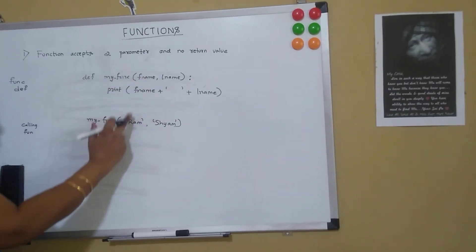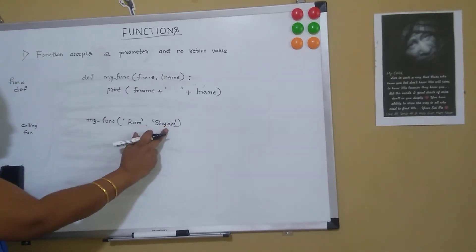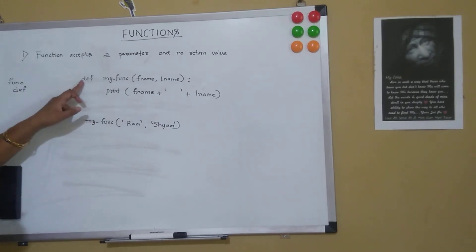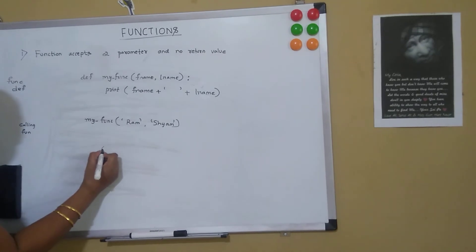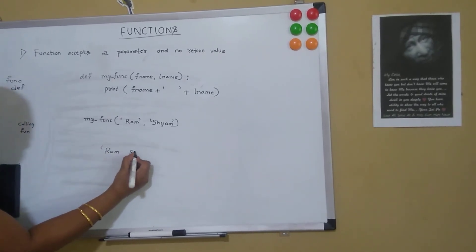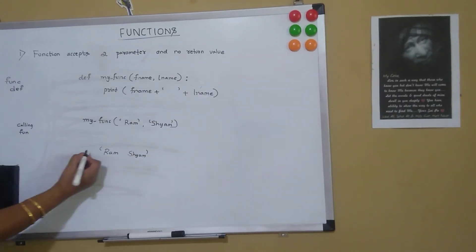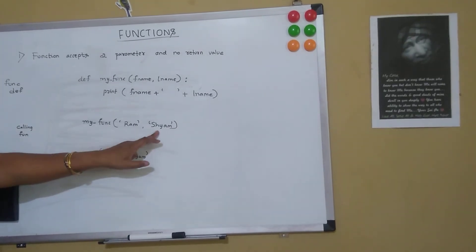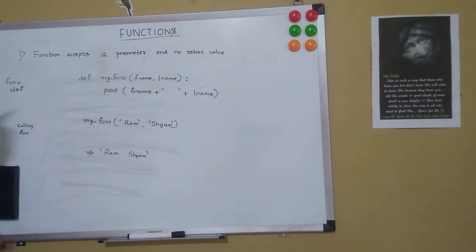The number of parameters should match and the order also should match. So f_name will store 'ram' and last_name will store 'shyam'. When I call this function, it will print 'ram shyam' on the console — ram, then a space, then shyam. This is a function which accepts two parameters and is not returning anything back to the calling statement.